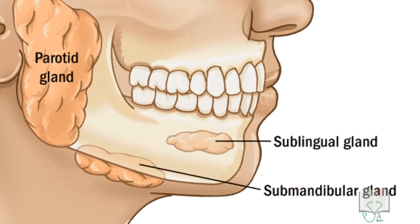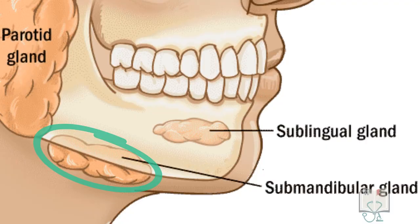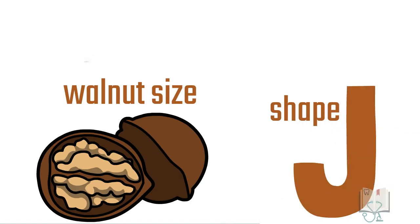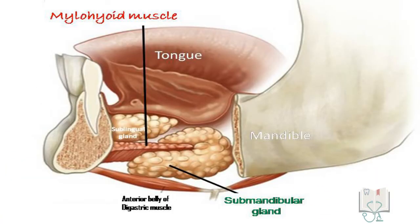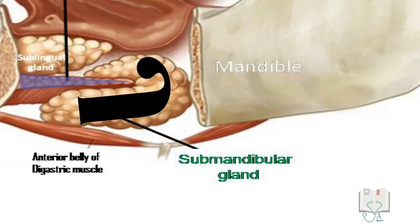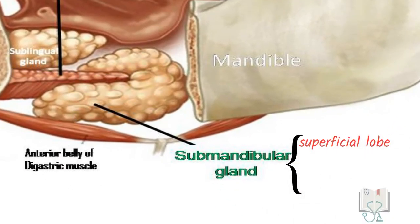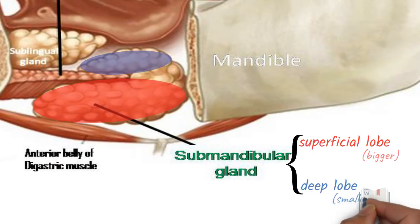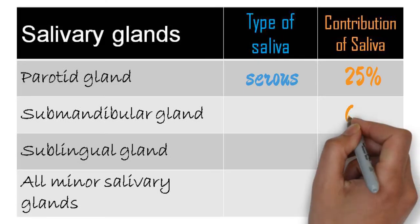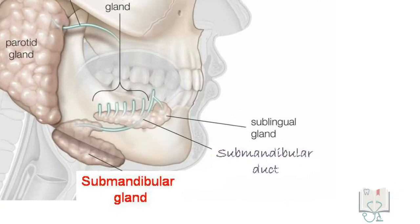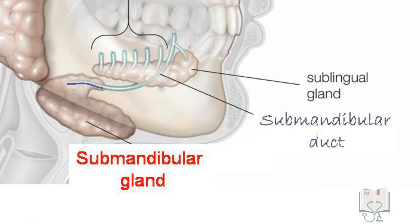The submandibular gland lies on the medial aspect of the body of the mandible in the submandibular triangle. It is the second largest salivary gland, walnut-sized and roughly J-shaped, weighing around eight grams. The J-shape is because it is indented by the posterior border of the mylohyoid muscle, which divides it into a larger superficial lobe below the mylohyoid and a smaller deep lobe above. The submandibular gland contributes 65% of the saliva, which is of mixed variety.